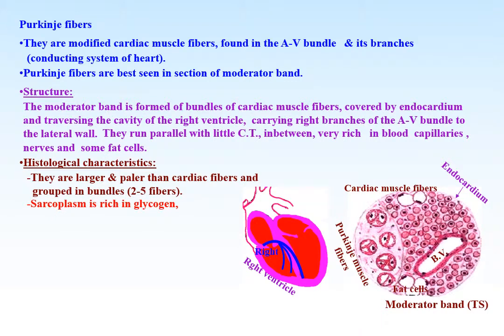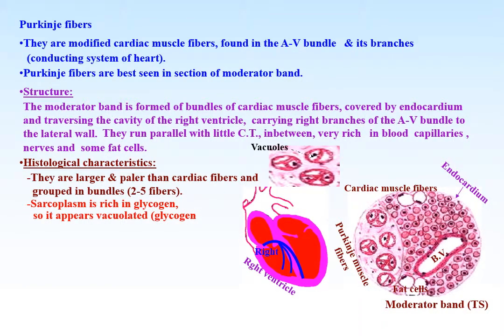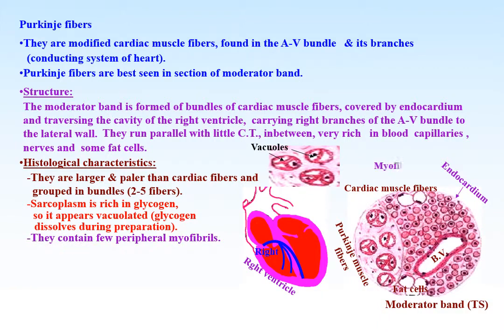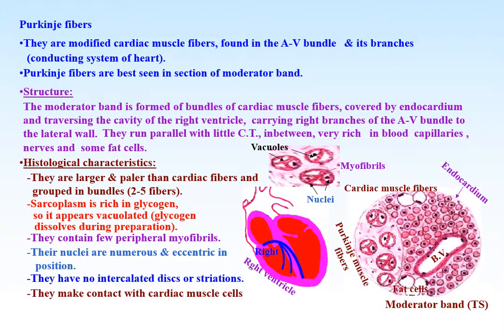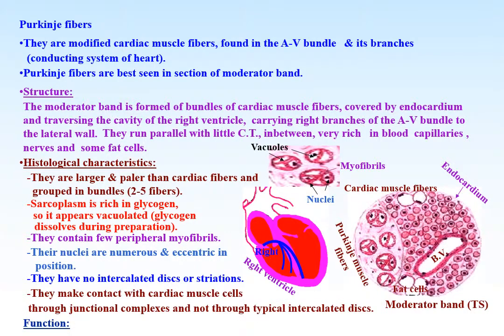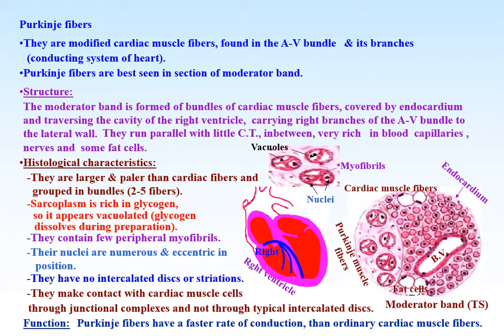Histologically, Purkinje fibers are larger and paler than cardiac muscle fibers and are grouped in bundles of two to five fibers. The sarcoplasm is rich in glycogen, so it appears vacuolated as glycogen dissolves during preparation. Purkinje fibers contain few peripheral myofibrils; their nuclei are numerous and eccentric in position. They have no intercalated discs or striations and make contact with cardiac muscle cells through junctional complexes.